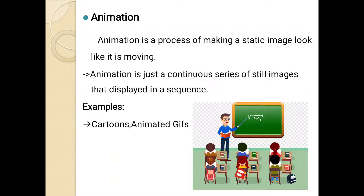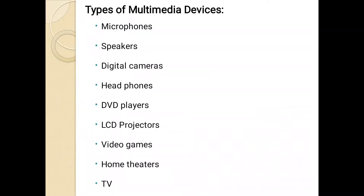Animation: Animation is the process of making a static image look like it is moving. Animation is just a continuous series of still images that is displayed in a sequence. Examples: Cartoons and Animated GIFs.